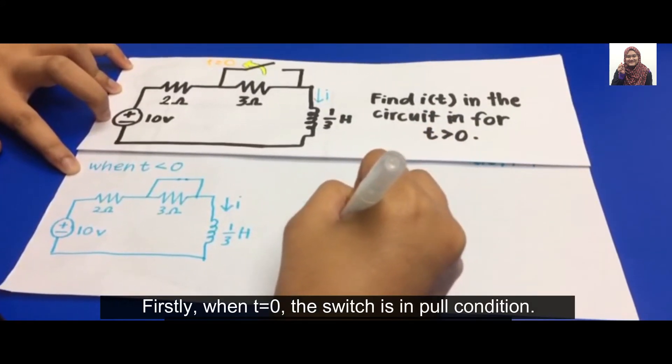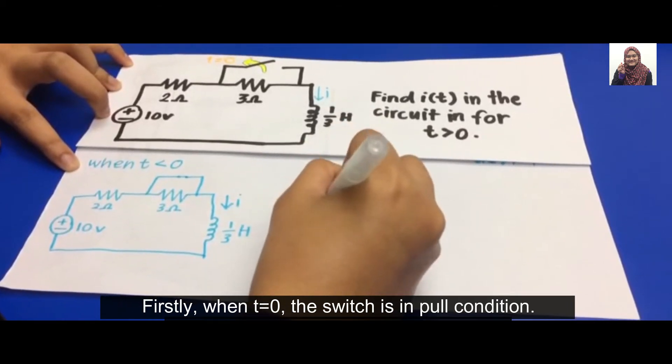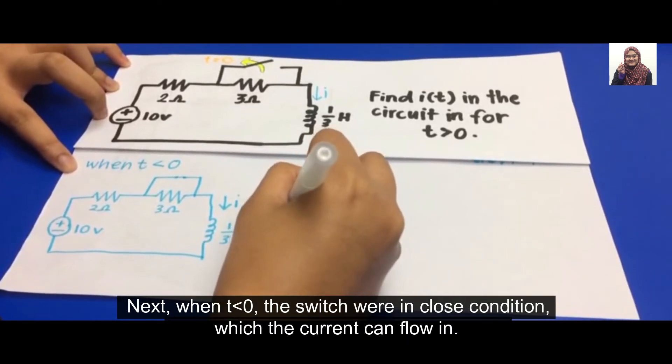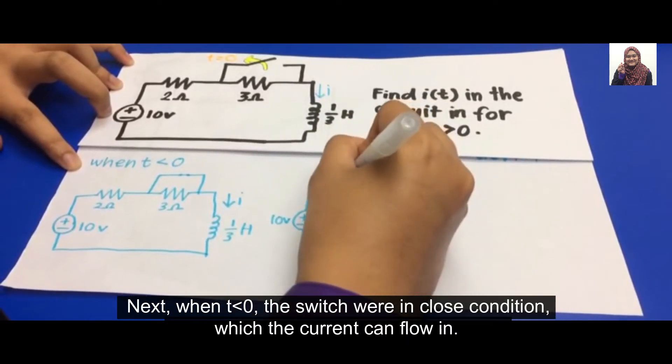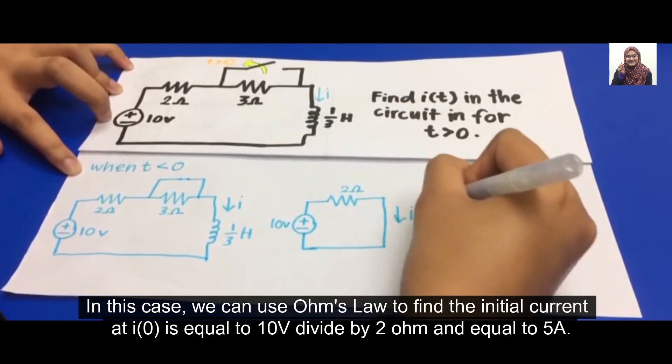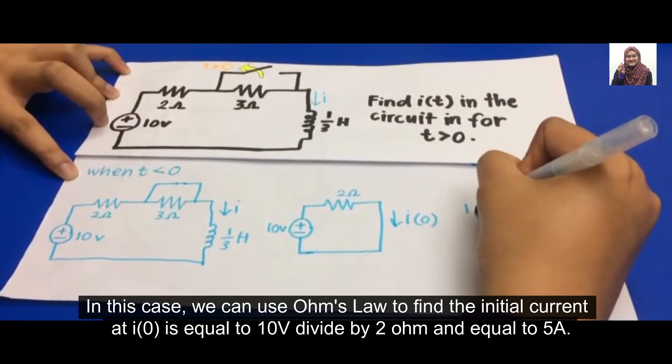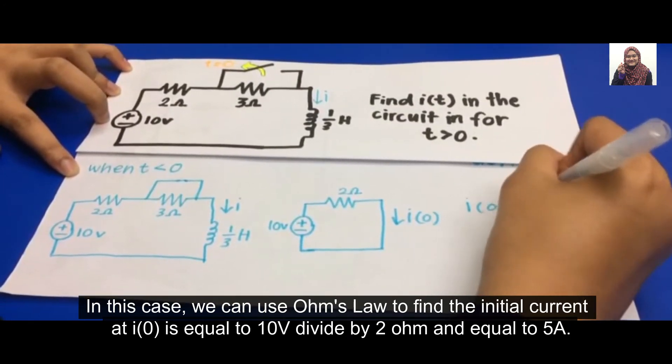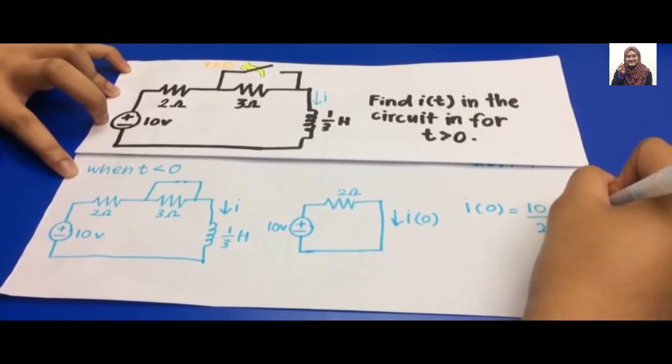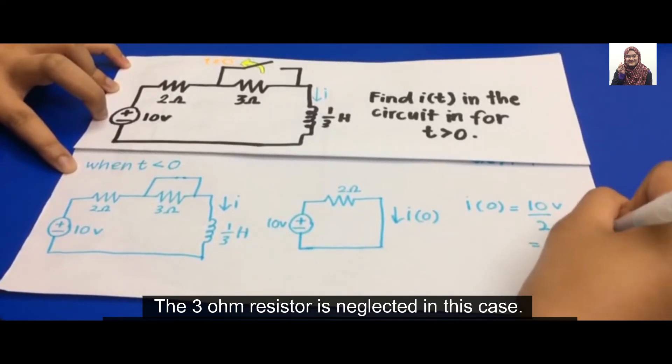Firstly, when T equals zero, the switch is in open condition. Next, when T is less than zero, the switch is in closed condition, which the current can flow in. In this case, we use Ohm's law to find the initial current. i-naught equals 10 volts divided by 2 ohms, which equals 5 amperes. The 3 ohm resistor is neglected in this case.